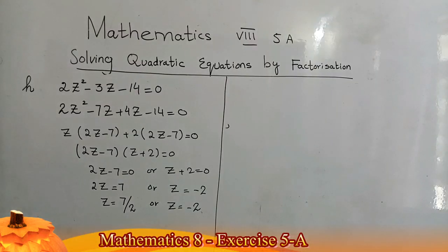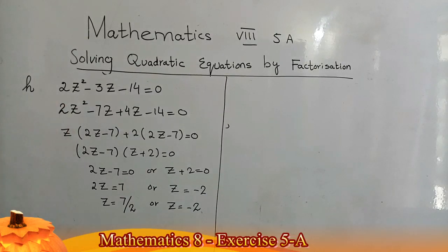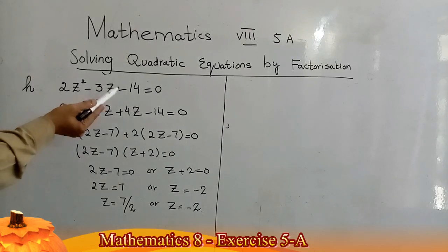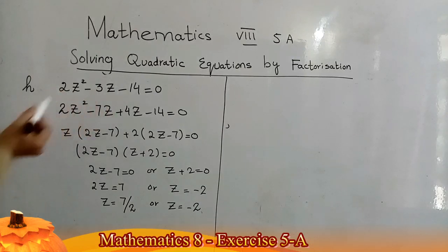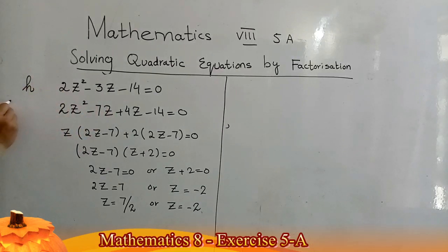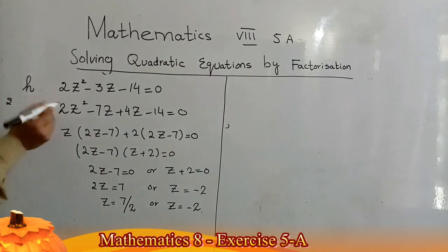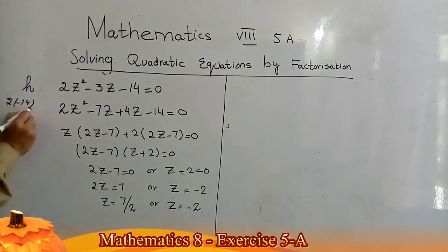Question number five, part H: 2z² − 3z − 14 = 0. The coefficient of z² is 2 and the constant term is −14, so their product is −28.